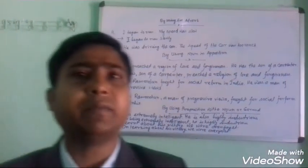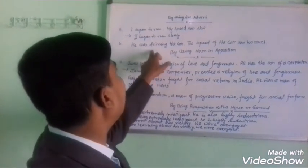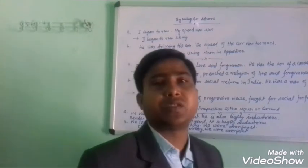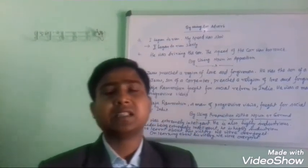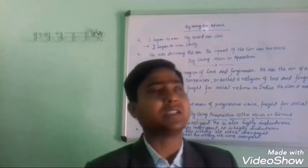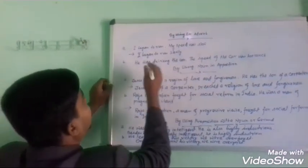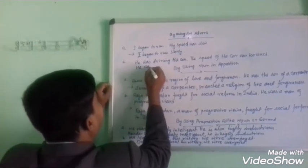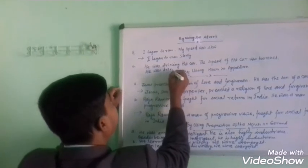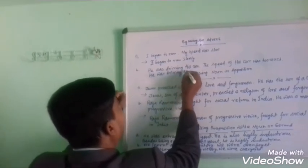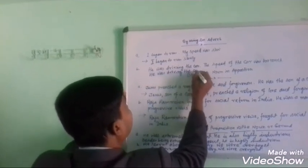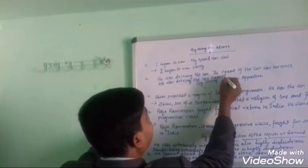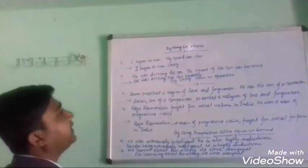Another example: 'He was driving the car. The speed of the car was too much.' The answer is: 'He was driving the car speedily.' So 'speedily' is the adverb. In the first sentence, 'slowly' is the adverb.